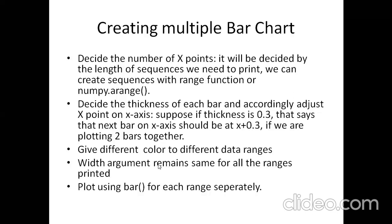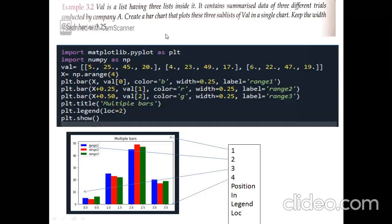If you are drawing three bars in one single plot area, the bar function will be called three times — just like calling the line or plot function multiple times for multiple lines. The example question says: we have a value list containing three sub-lists representing three trials by a company. We have to create a bar chart plotting all three sub-lists in a single chart with a width of 0.25.